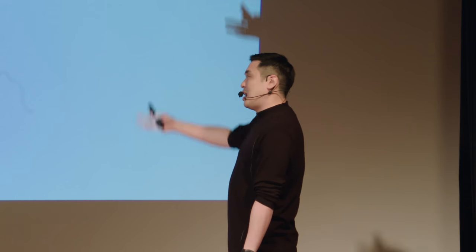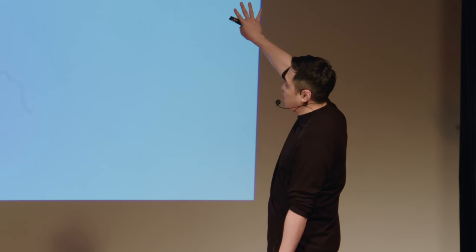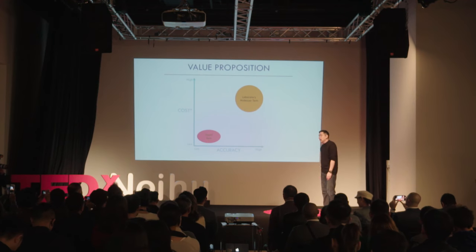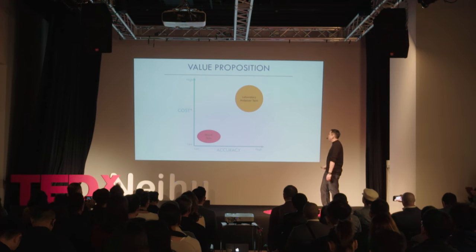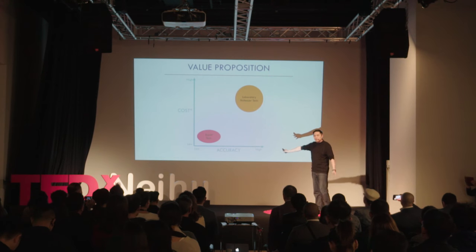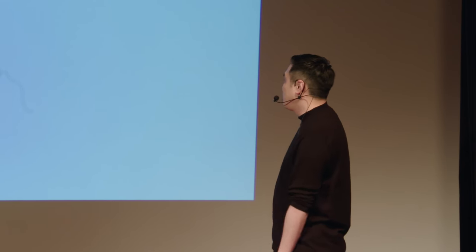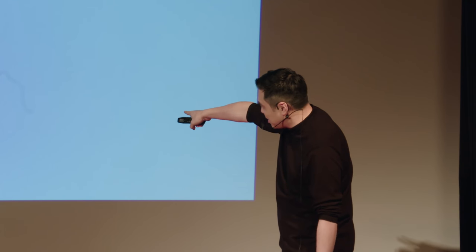So what is the value proposition here? The laboratory test is great — very high accuracy, sitting in the upper right of the chart — but it's not affordable, it's really expensive. The rapid immunoassay test is affordable, but remember the poop analogy — it is not very sensitive. What we want is in the bottom right-hand corner: a point of care molecular test that is both affordable and accurate.